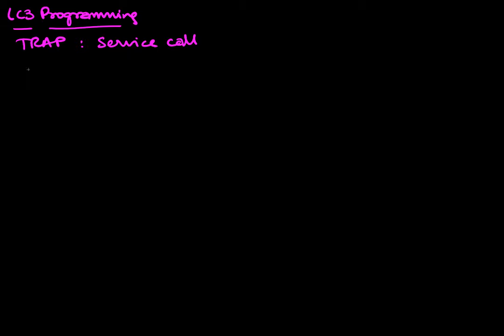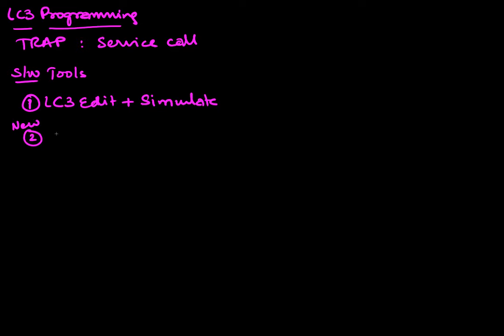Depending on which software tools have been written for LC3, there are two tools that are popular. One is the old set of tools which has software called LC3 Edit and LC3 Simulate — the classic one that's been around for a long time. The other is the newer tool called LC3 Tools. I'm bringing this up because in the new tool there has been a change in how traps are implemented, which will cause problems if your assumptions are wrong. Let's look at what each does so we can cope with the differences.